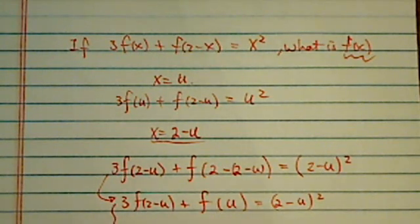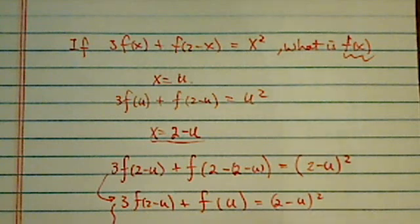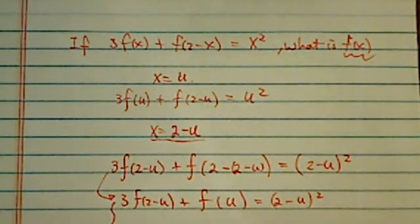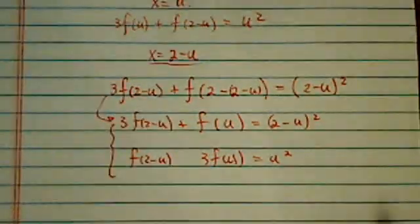Now combine this with the first equation, which will have 3f(u) here, f(2-u) is here, equal to u². Now our job is to find f(u).